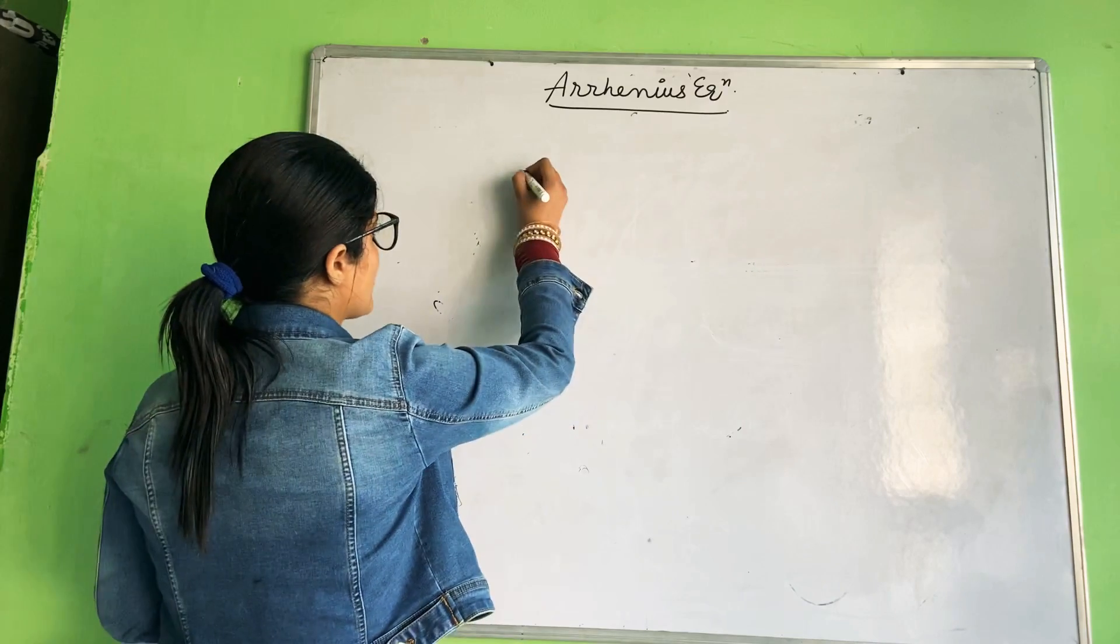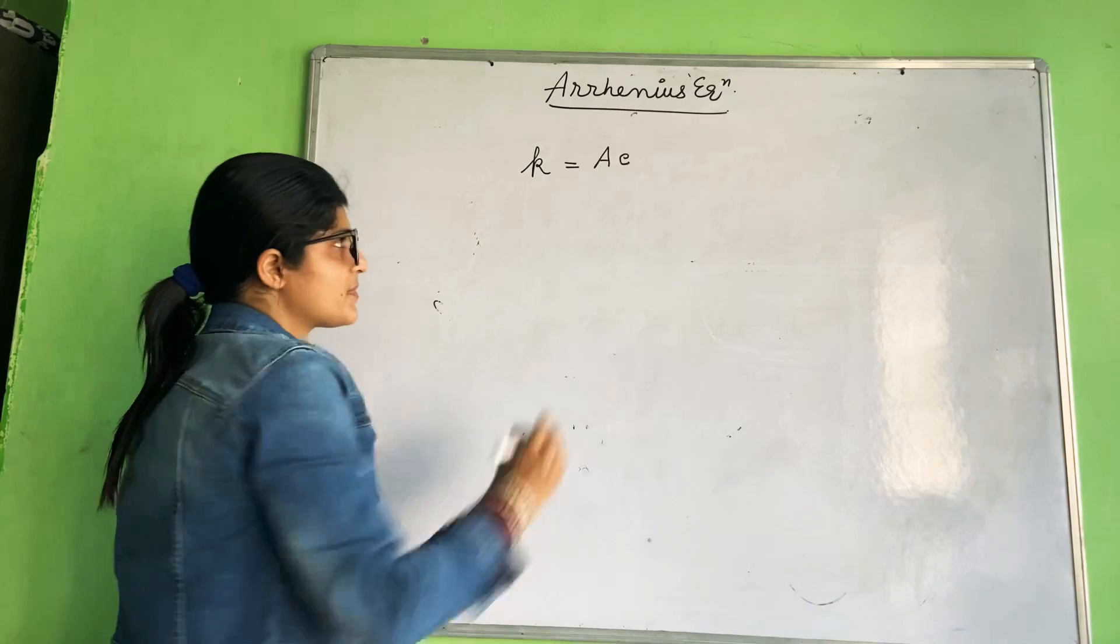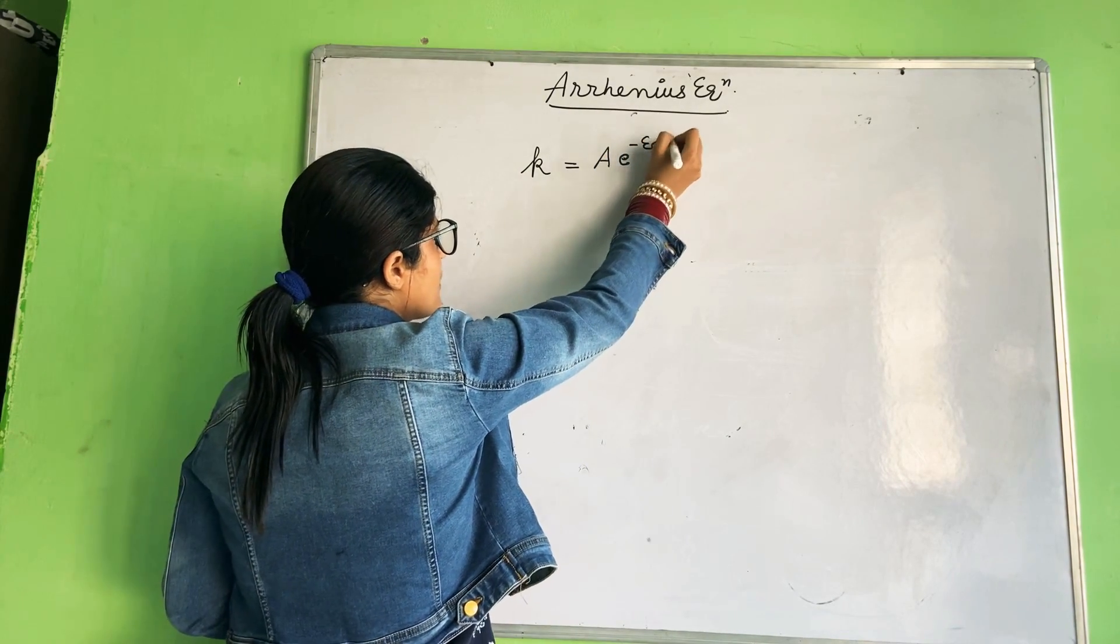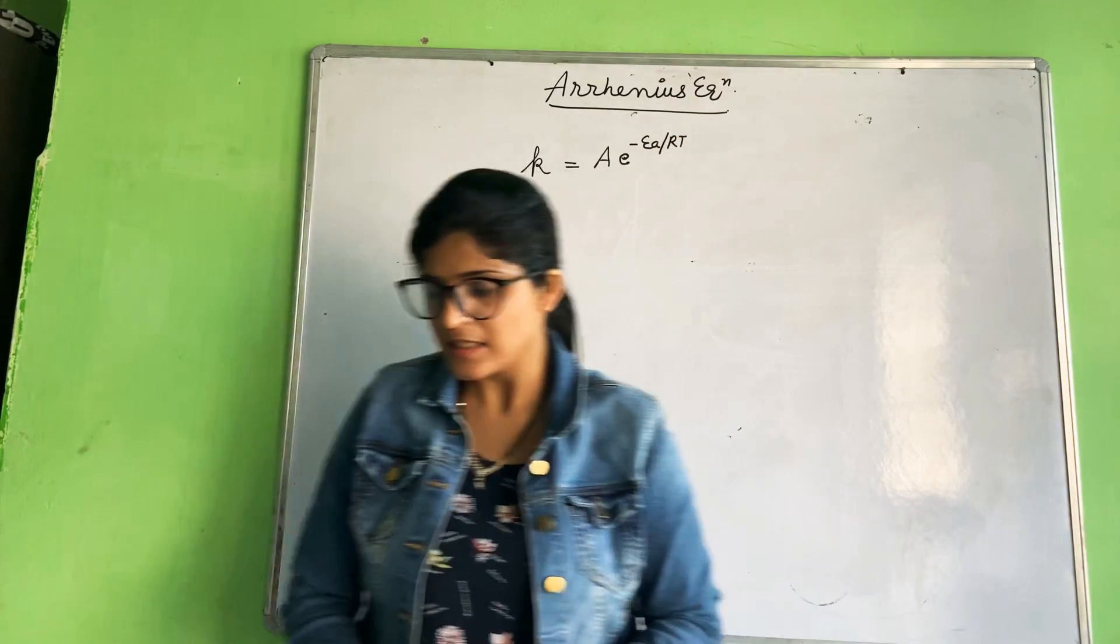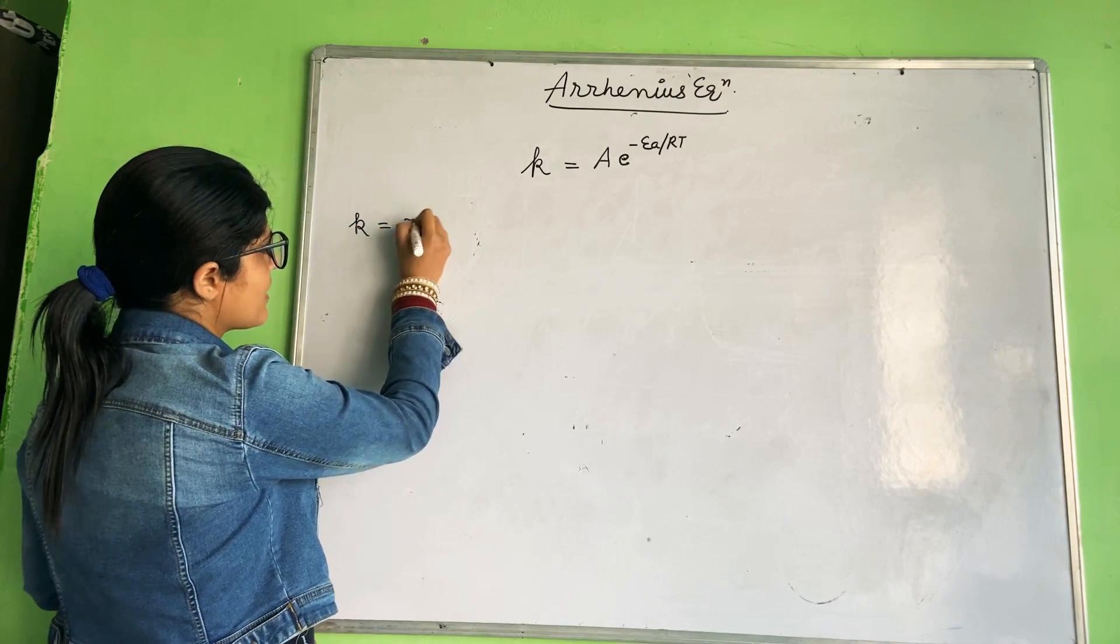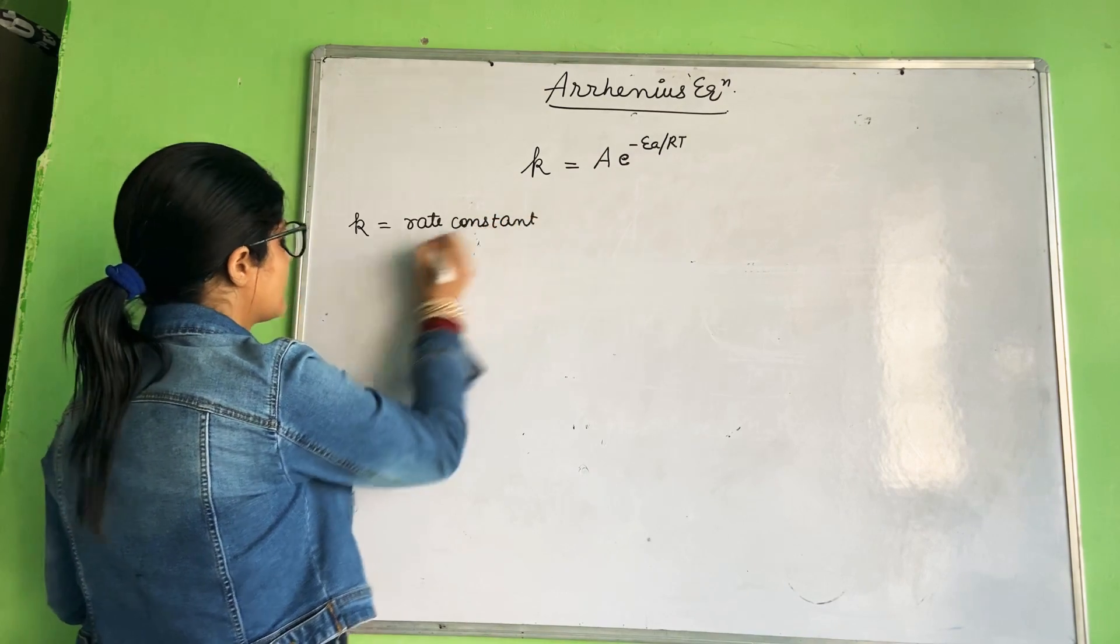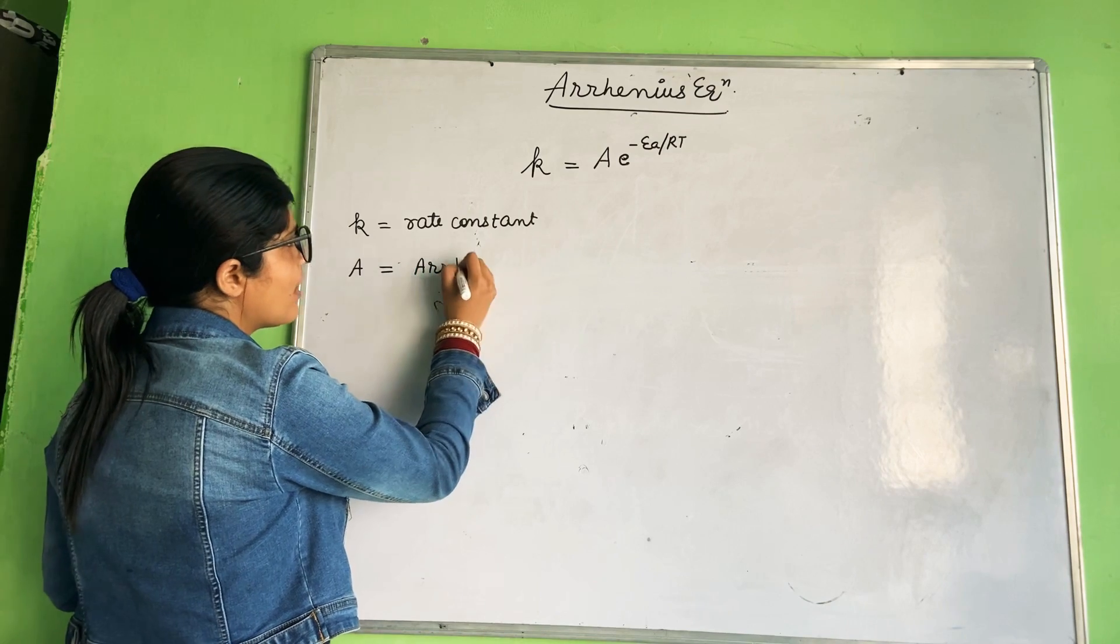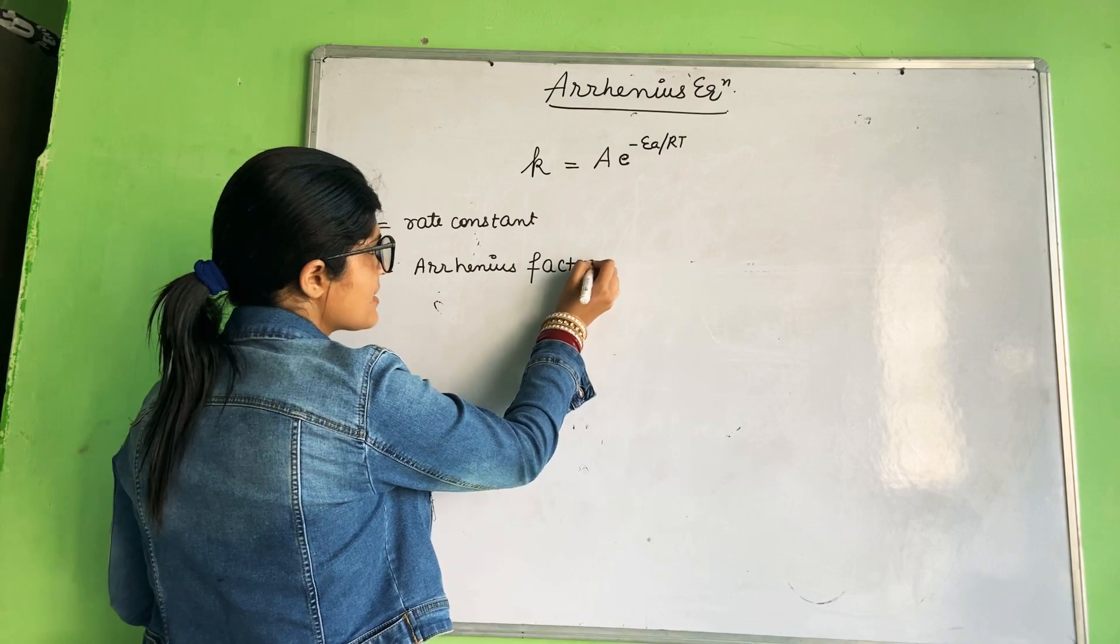Arrhenius equation: k equals A times exponential minus Ea upon RT. This is the Arrhenius equation. Here k is rate constant or specific rate of reaction, A is the Arrhenius constant or Arrhenius factor.